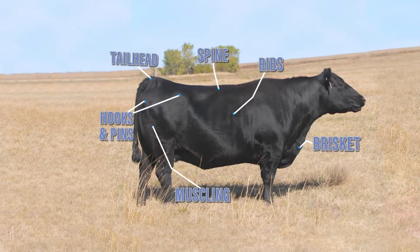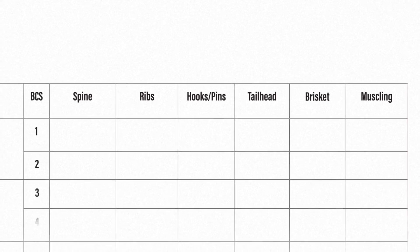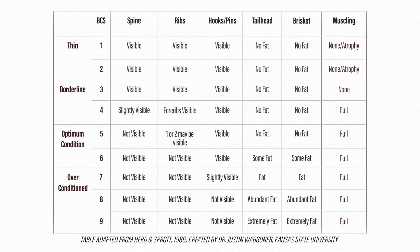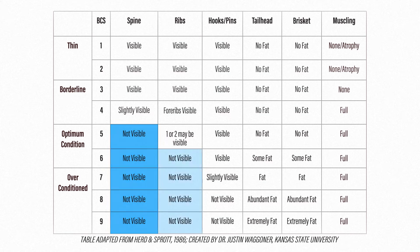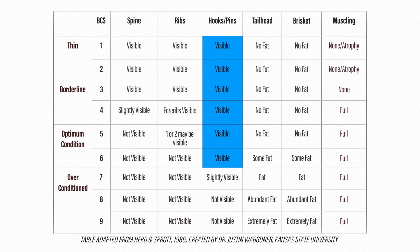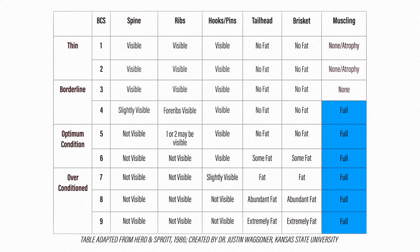The table on the scoring guide is a great quick reference when assessing body condition score. Along the top, each of the six physical attributes to evaluate are listed. Under each of those, for the respective 1 to 9 score, it lists what's expected to be seen. For example, when evaluating the spine, if the spine is not visible, the animal is at least in a body condition score of 5, depending on other areas to evaluate. If no ribs are visible, the animal is at least in a body condition score of 6. When we evaluate the hooks and pins, if they are visible, we'll be looking at a body condition score of somewhere between a 1 and a 6. Looking at either the tailhead or the brisket, if there is fat accumulating in these areas, the animal is in a body condition score of at least 6. When looking at muscle, a body condition score of 4 or greater has full muscling.